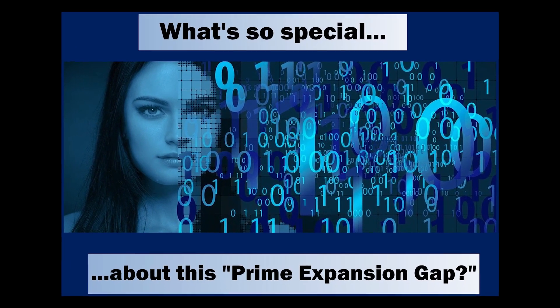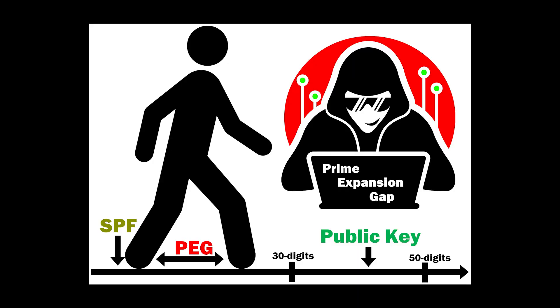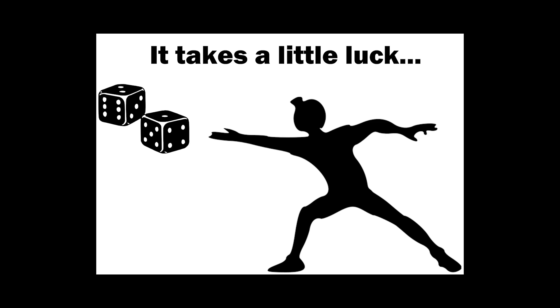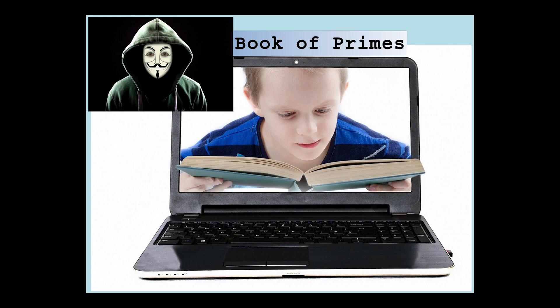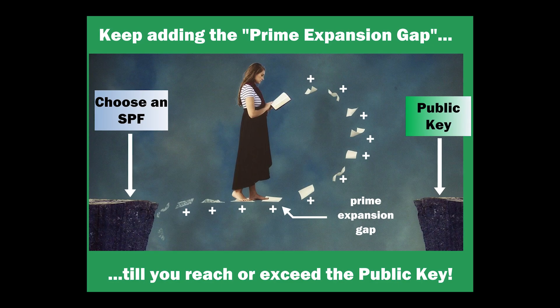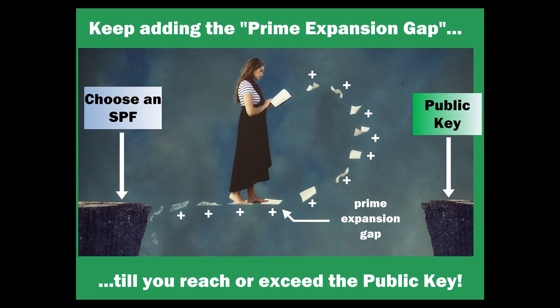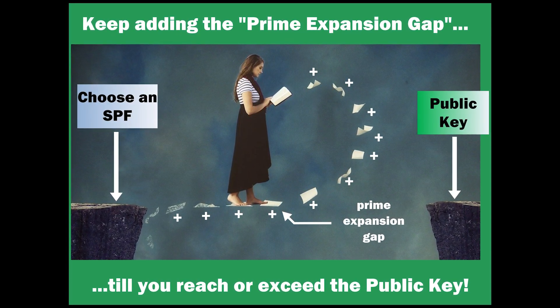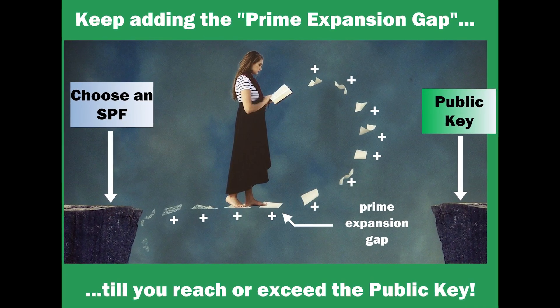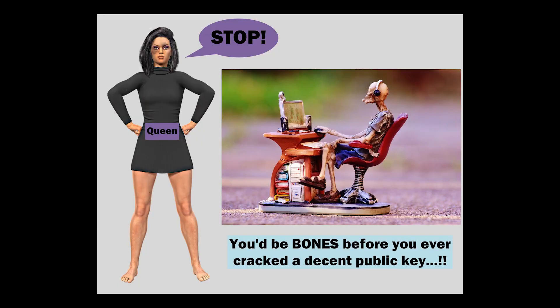What's so special about this prime expansion gap? I find the prime expansion gap so I can add it to the smaller prime factor to get to the public key. I will readily admit, it takes a little luck. I look in my book of primes. You choose a prime that becomes your smaller prime factor, keep adding the prime expansion gap till you reach or exceed the public key. Stop. You'd be boned before you ever cracked a decent public key.